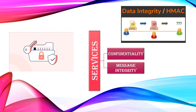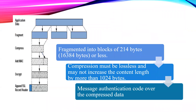So seeing this, we can split the record protocol into different steps: first being fragmentation, next compression, then adding the message authentication code, then completely encrypting the data, and sending it with the complete record header.